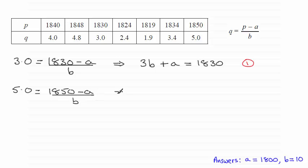If I rearrange this, multiply by b and add a to both sides we end up with 5b plus the constant a equals 1850 and I'll call that equation 2.